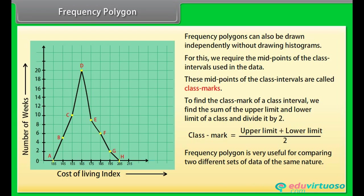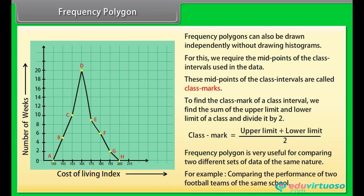A frequency polygon is very useful for comparing two different sets of data of the same nature — for example, comparing the performance of two football teams of the same school.